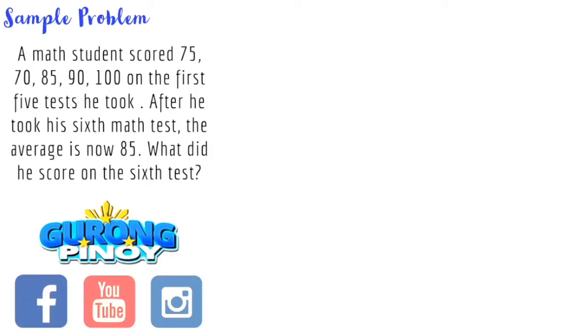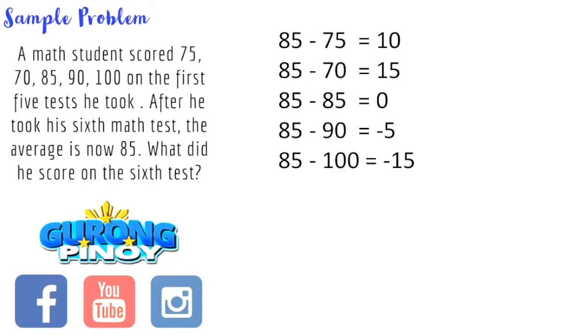What we can do here is we subtract each score from the given average. So that's the first step. Subtract each score from the given average. So we have 85 minus 75, which is equal to 10. 85 minus 70 equals 15. Then the next score is 85. So 85 minus 85 is 0. Next score is 90. So that's 85 minus 90, giving us negative 5. Then we have 85 minus 100, which gives us a difference of negative 15.